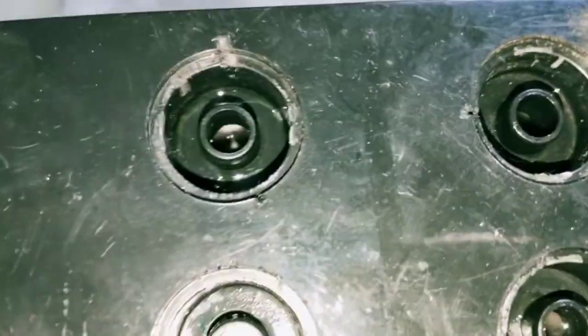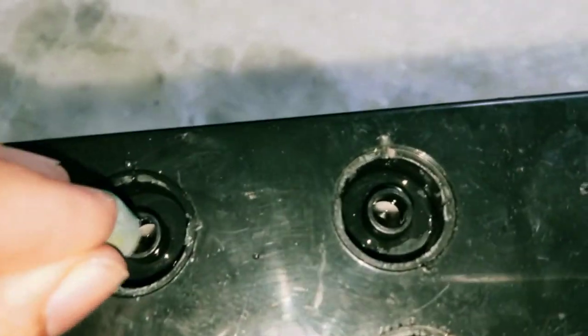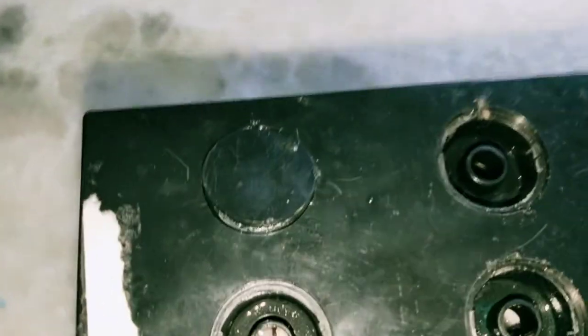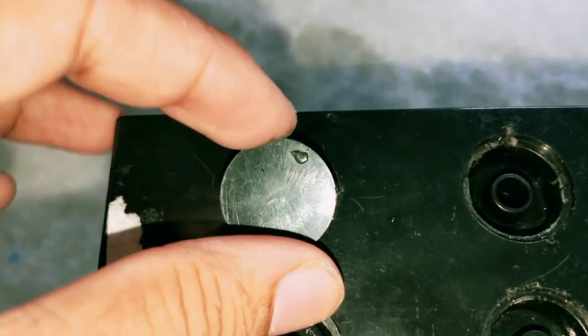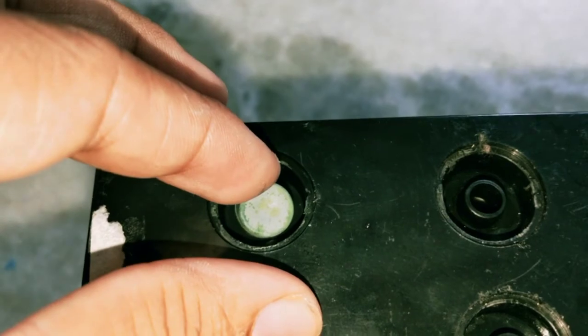But the problem is, friends, this type of lead acid battery is sealed tightly with these stoppers, and we require this instrument to remove the lid from the battery. First we have to unlock this lid, then we have to remove the stopper.